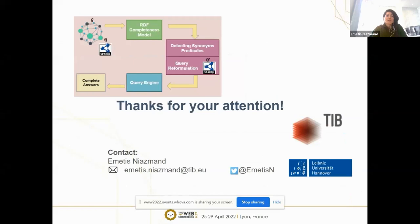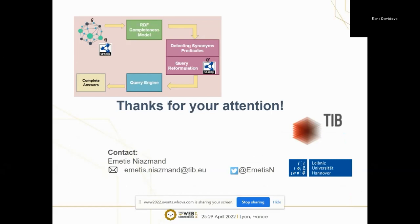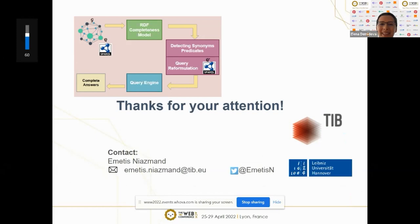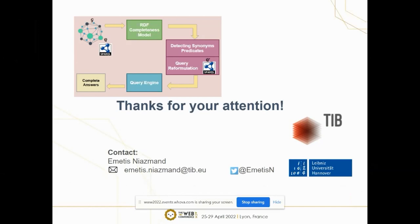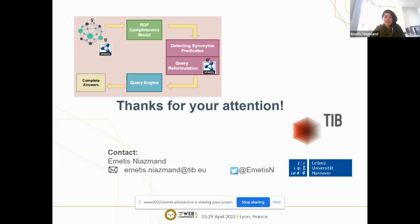Thank you for your attention. Thank you very much. Are there any questions? Maybe I can ask one: is your approach applicable also to other knowledge graphs, not only DBpedia as shown in the presentation? Yes, actually the next step is to work with Wikidata as a benchmark. As I said, because the approach is agnostic, we can use any knowledge graph which includes synonyms. In Wikidata we need to find a way to discover synonyms since the structure is different from DBpedia, but as long as we have a knowledge graph with synonyms in the predicates, we can apply this approach.